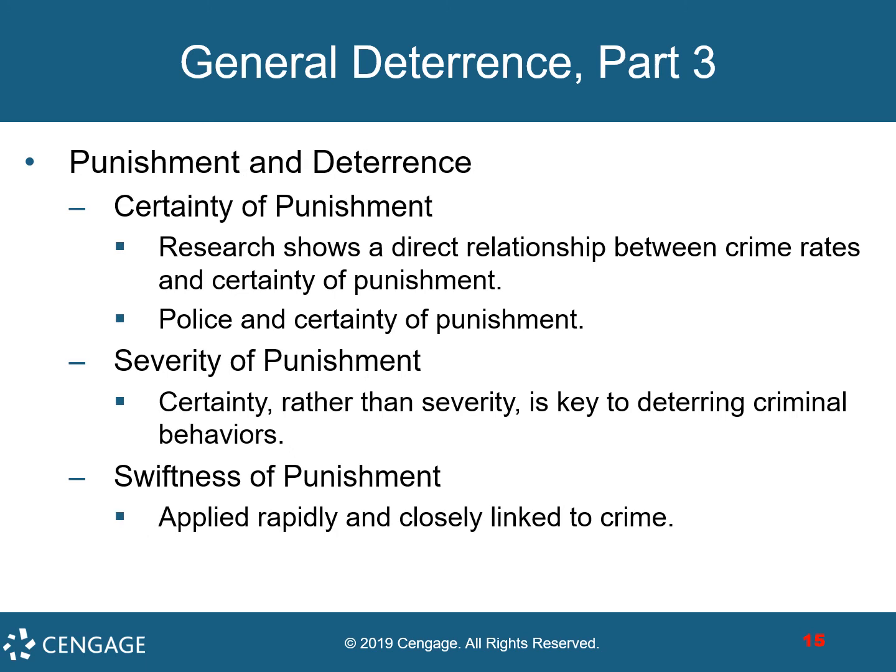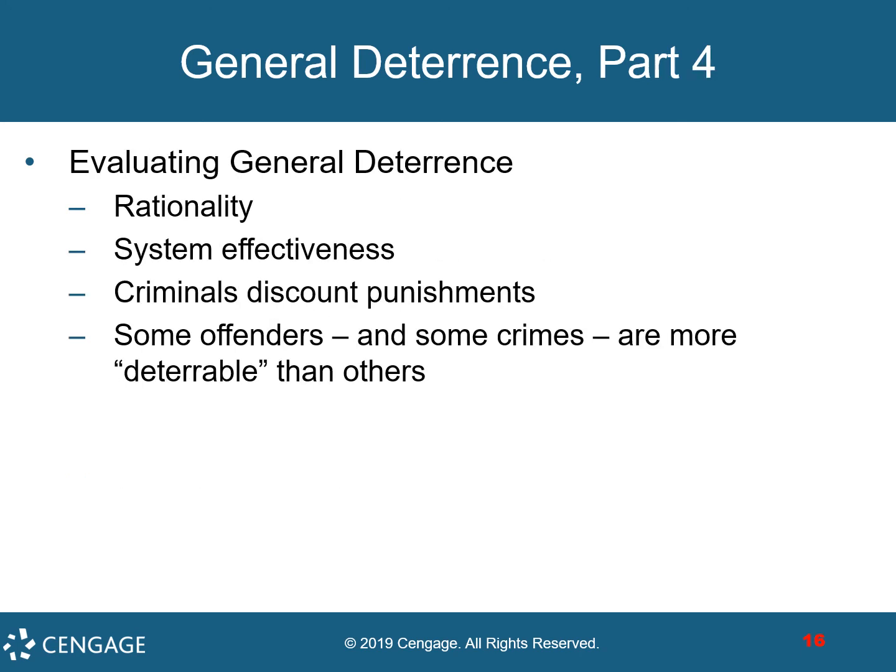Regarding punishment and deterrence: certainty of punishment shows a relationship with crime rates. There is little consensus that strict punishment alone can reduce crime. The more rapidly punishment is applied after a crime, the more likely it is to serve as a deterrent. When evaluating general deterrence, four factors are involved: rationality, system effectiveness, criminals discounting punishments, and the fact that some offenders and crimes are more deterrable than others.